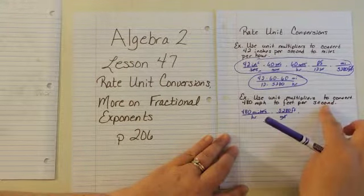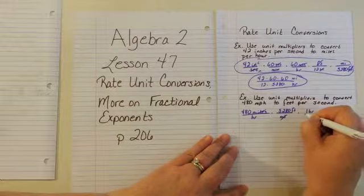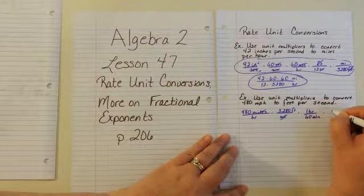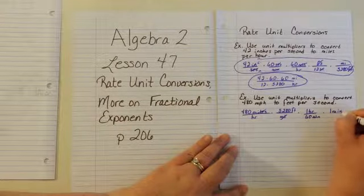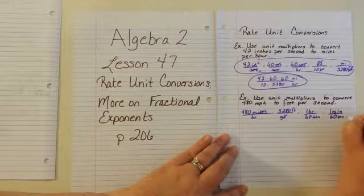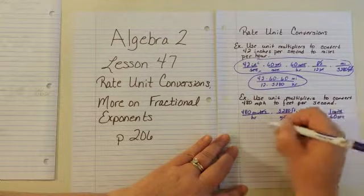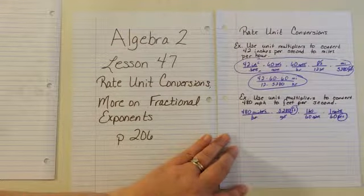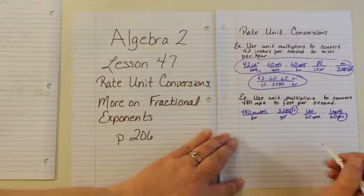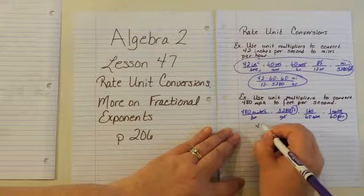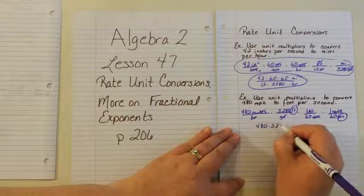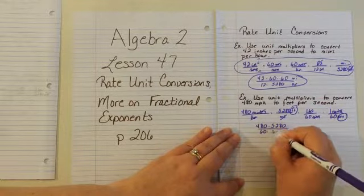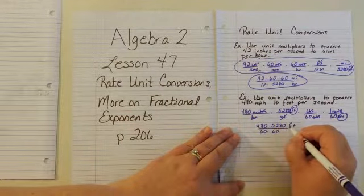Now we have an hour and we're going to convert to seconds. One hour is the same as 60 minutes, and one minute is the same as 60 seconds. The minutes cancel, the hours cancel, and we're left with feet per second. If you did this neatly you can leave it in this form, or you can rewrite it as 480 times 5,280 over 60 times 60, in feet per second.